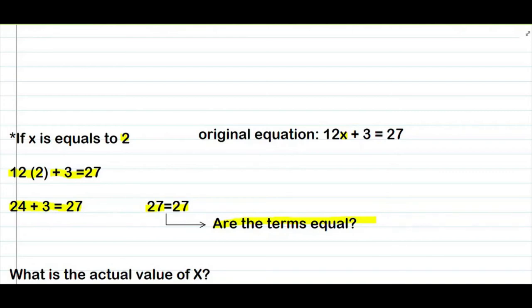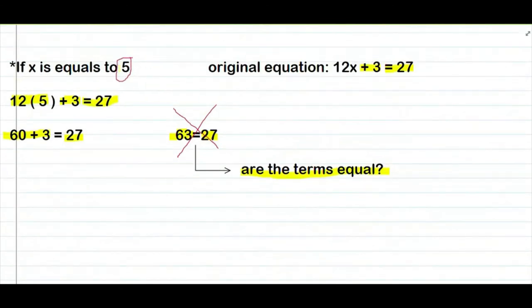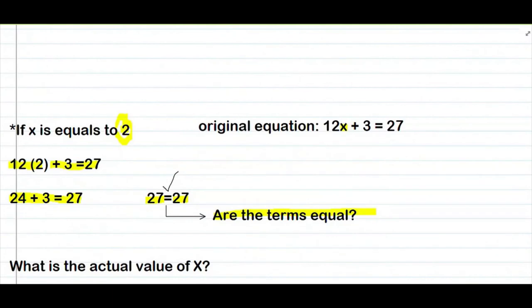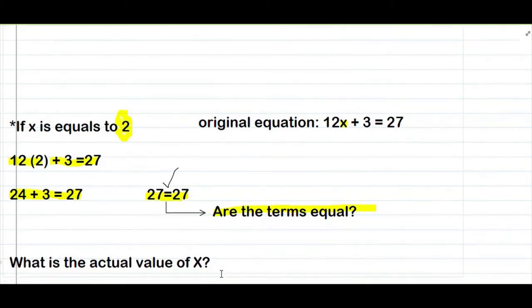Equal na sila. Ibig sabihin, tama na yung ginamit nating value ng x. Nung ang value ng x natin is 5, mali. Nung ginamit natin is yung 2, tama yung nakuha natin. Pag tinanong sa atin ano ang actual value ng x — actual value ng x is 2.